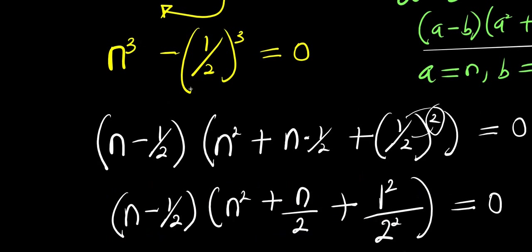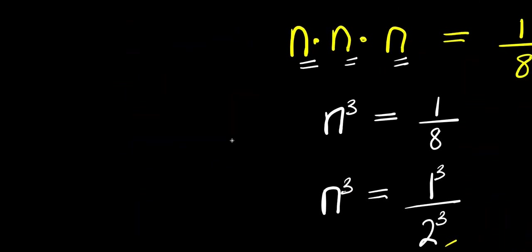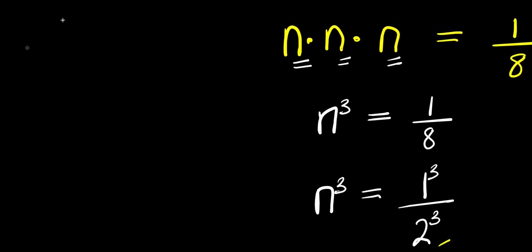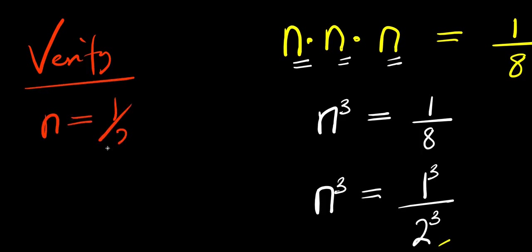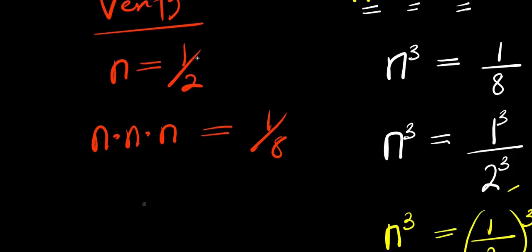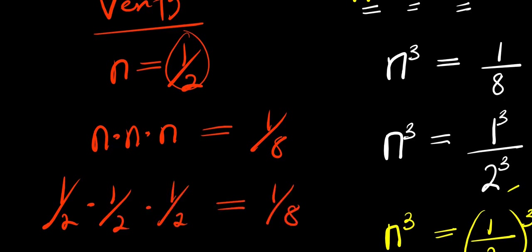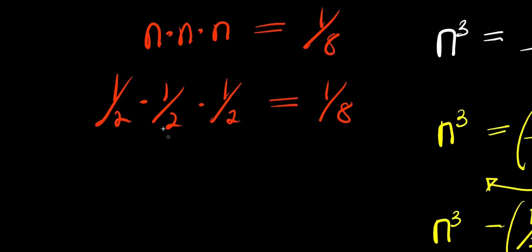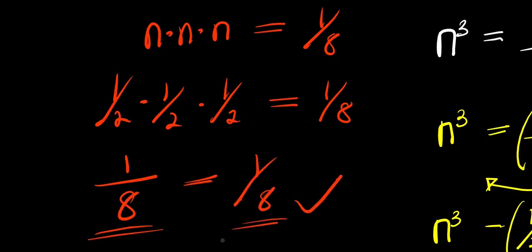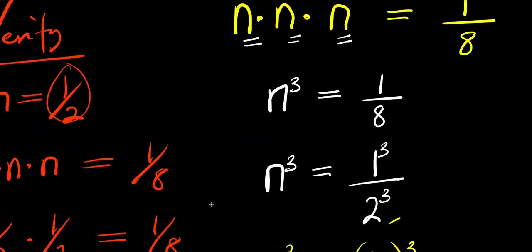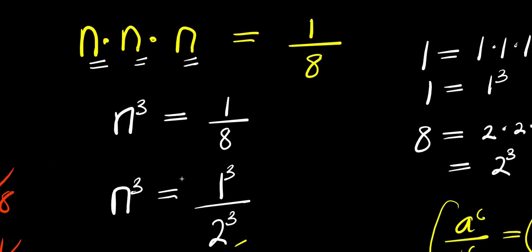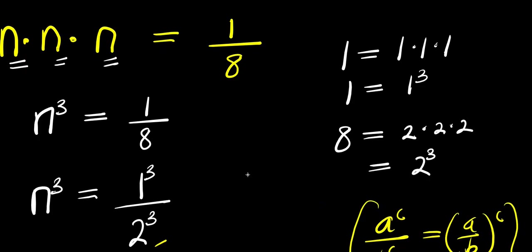At this point we can verify by inserting the real root n equals 1 over 2: n times n times n equals 1 over 2 times 1 over 2 times 1 over 2 equals 1 over 8. Left-hand side equals right-hand side, so this is confirmed. That's how you solve this type of problem — don't forget to subscribe and share this video with your friends. Thank you and see you again.